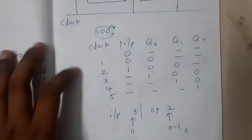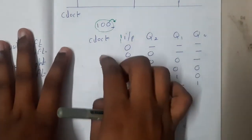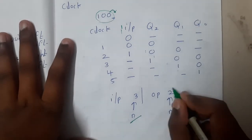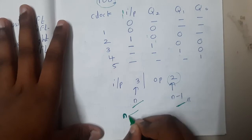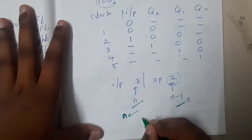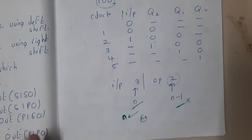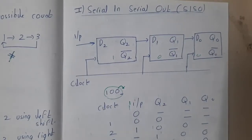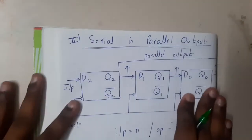To push the full input, you need three clocks — in general, for n bits you need n clocks for input. To pop the output you need only n minus 1 clocks. So the concept of Serial In Serial Out is: bit by bit you send inside, bit by bit you get outside.